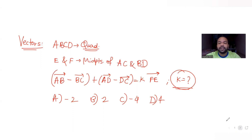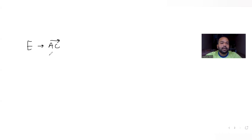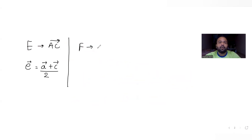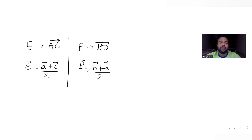ABCD is a quadrilateral and E and F are midpoints of AC and BD. When E is the midpoint of AC, I can write vector E as (A bar plus C bar) upon 2 by the midpoint formula. F is the midpoint of BD, so F bar becomes (B bar plus D bar) upon 2. That's the midpoint formula we are applying.